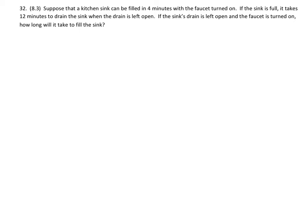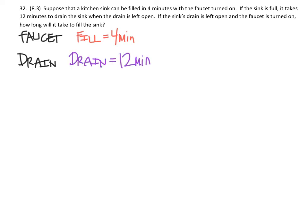So we're comparing the faucet to the drain, and what we know is that the faucet will fill the sink in four minutes and the drain will drain it in 12 minutes. And if we made this a rate per minute, we can see that the faucet would fill it one-fourth of the way per minute and the drain would empty it one-twelfth of the way per minute, and we can represent that with a negative if we need to.